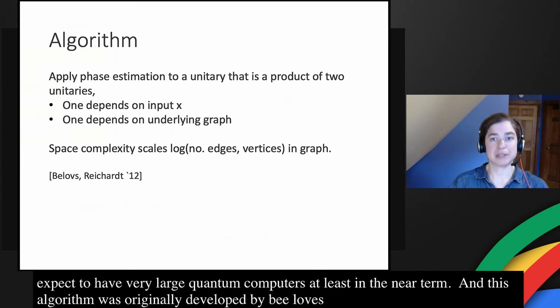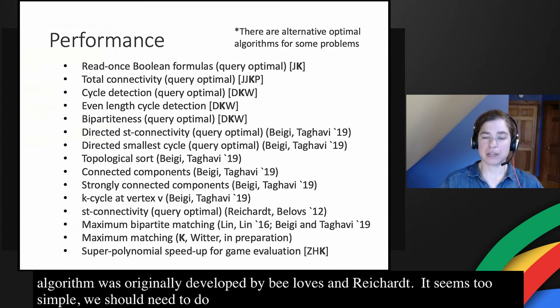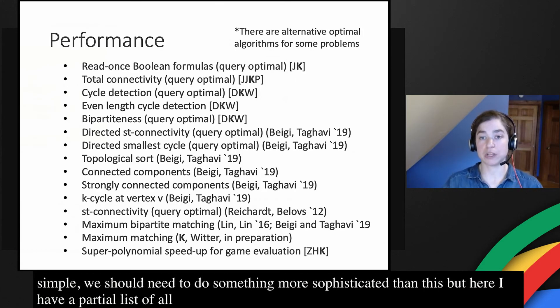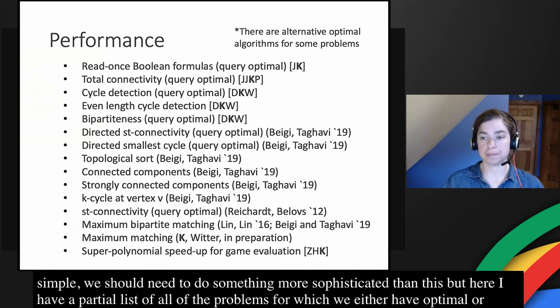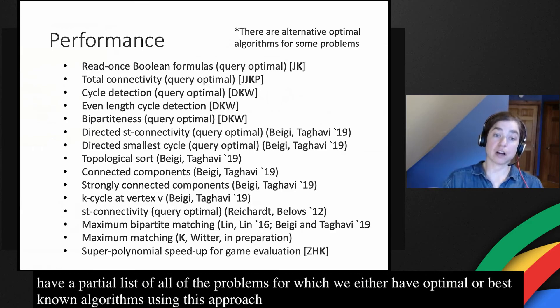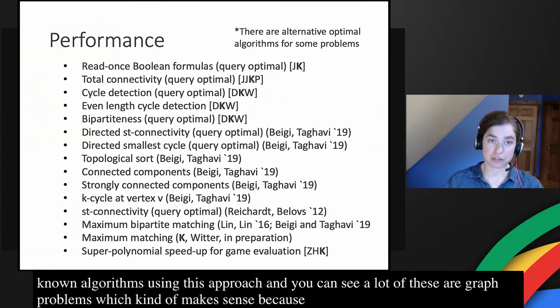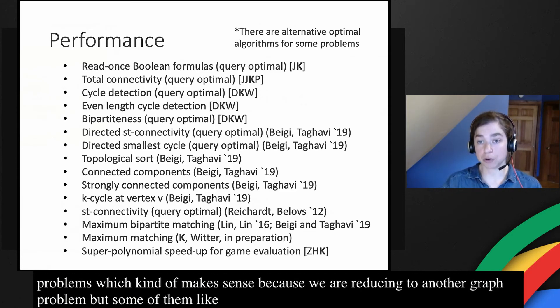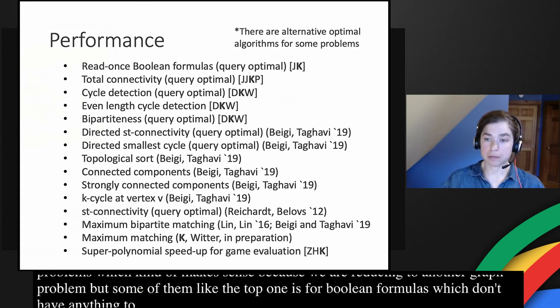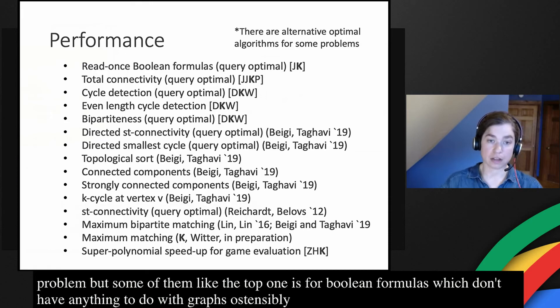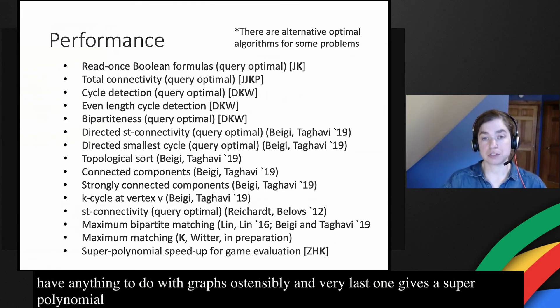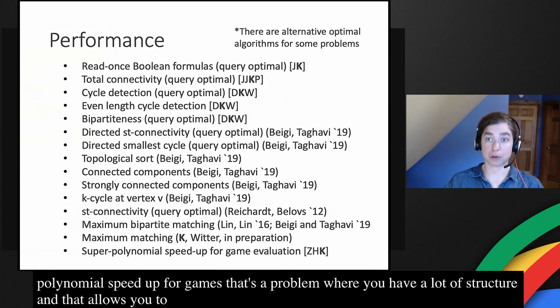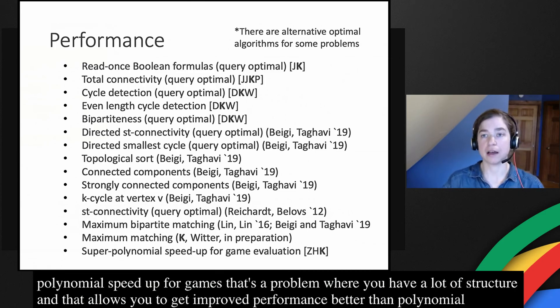Now you might be wondering, this seems simple and nice, but it can't be that this actually produces good algorithms. It seems too simple. But here I have a partial list of all of the algorithms or all the problems for which we either have optimal or best known algorithms using this approach. A lot of these are graph problems, which kind of makes sense because we're reducing to another graph problem, so it's natural. But some of them, like the very top one, is for Boolean formulas, which don't have anything to do with graphs ostensibly. And also the very last one gives a super polynomial speedup for evaluating games. So that's a problem where you have a lot of structure, and that structure allows you to get improved performance better than polynomial over a classical algorithm, but at the same time using this approach.